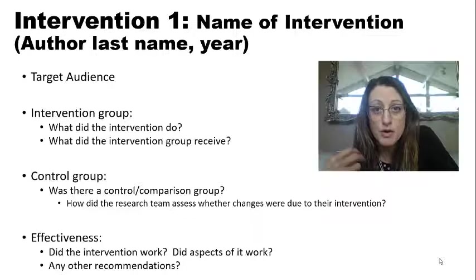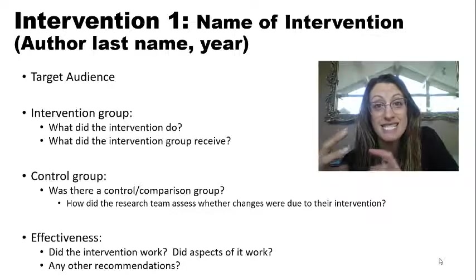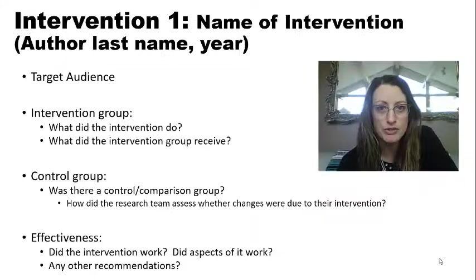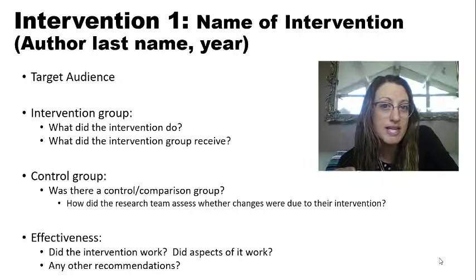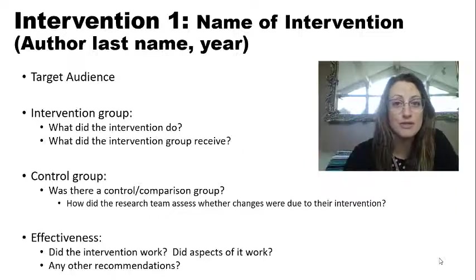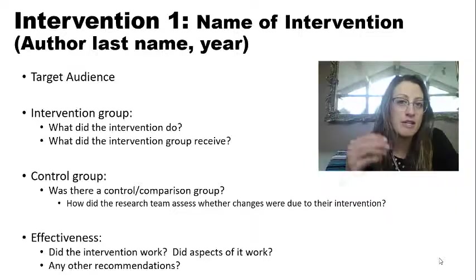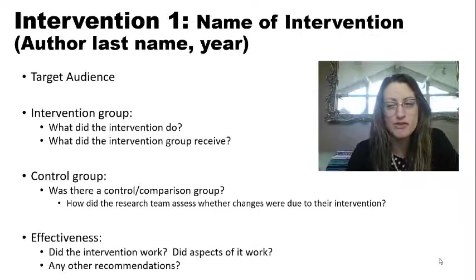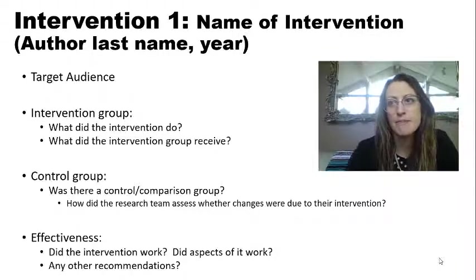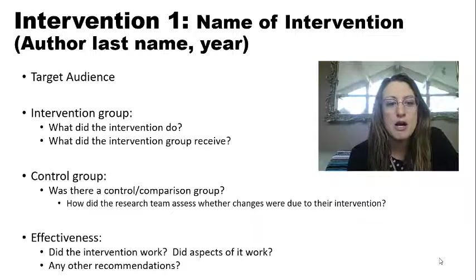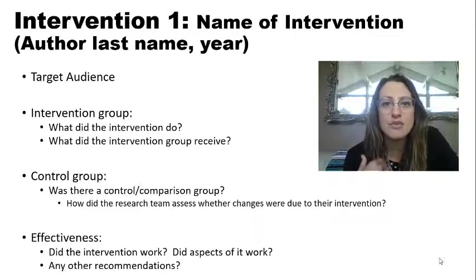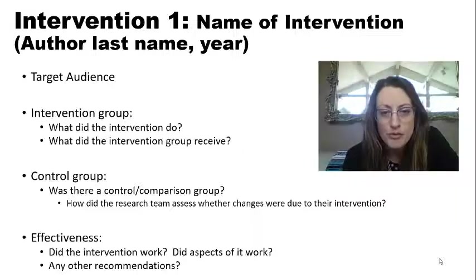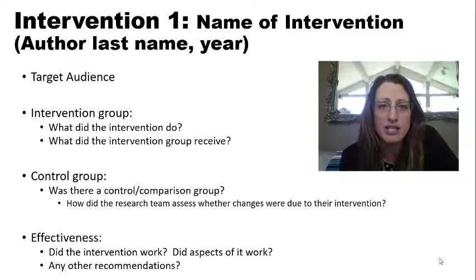In the discussion section, authors make sense of their results. They may relate findings to past research, explain what's new, and indicate which parts were successful or effective, or which parts weren't as effective. Identifying what aspects of the intervention worked is important because that's going to drive what you recommend in your recommendation section.